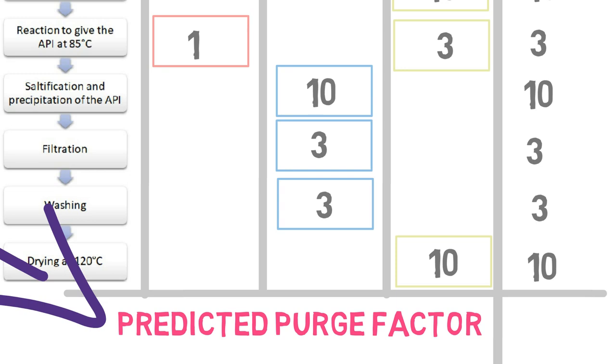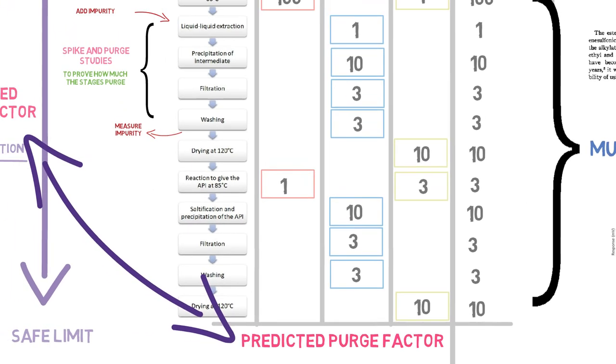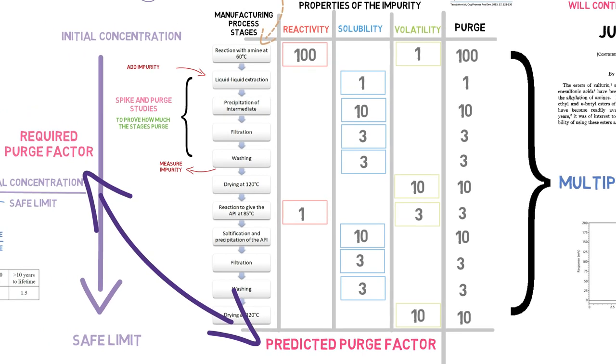To get the total purge factor, we multiply the individual ones. So, in this case, when we multiply all those values, we get a predicted purge factor of 243 million. But what does this mean? What was our required purge factor?